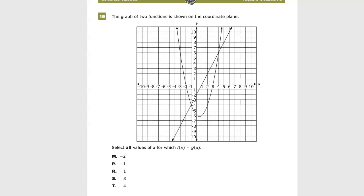The graph of two functions is shown on the coordinate plane. Select all values of x, and that's important. In fact, I did this as a sample before and actually kind of messed that up, so don't be me. Select all values for x for which f(x) is equal to g(x). What does that even mean?